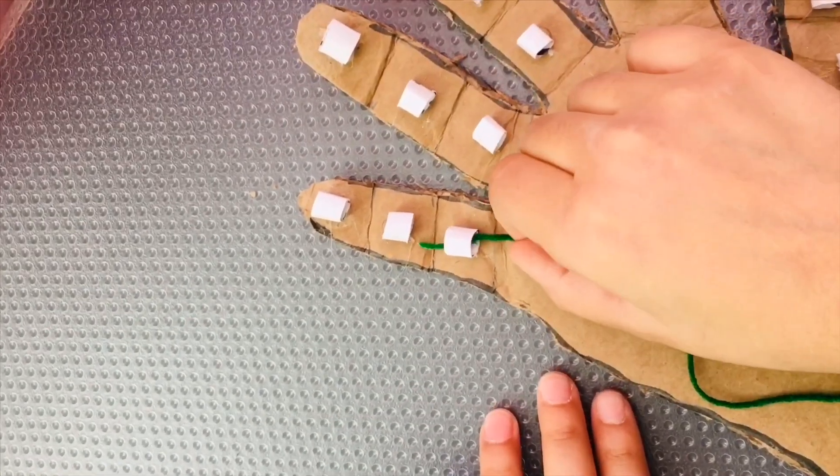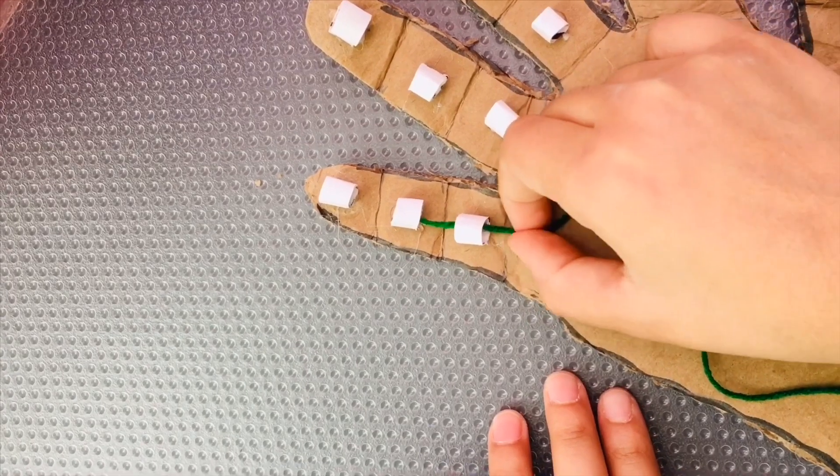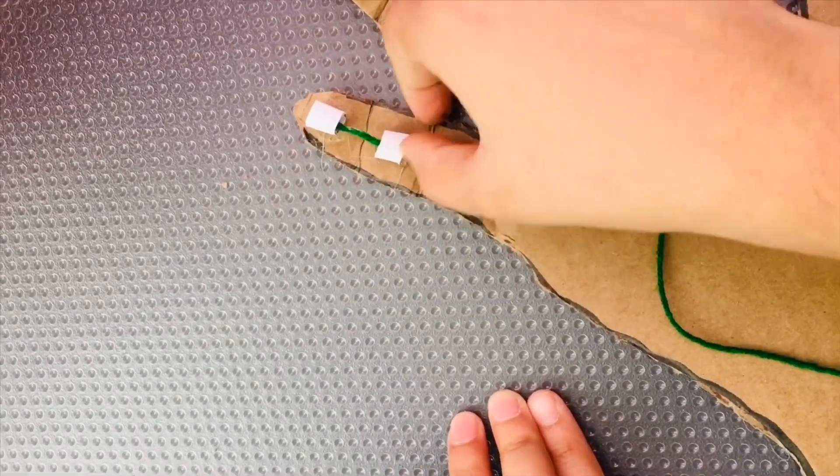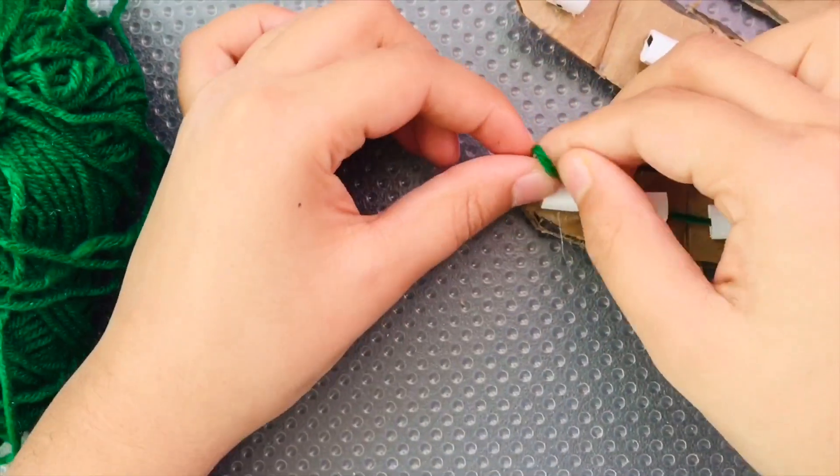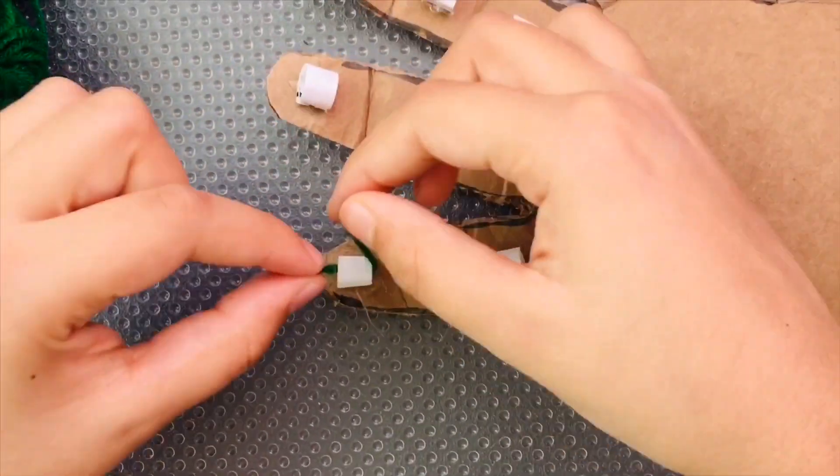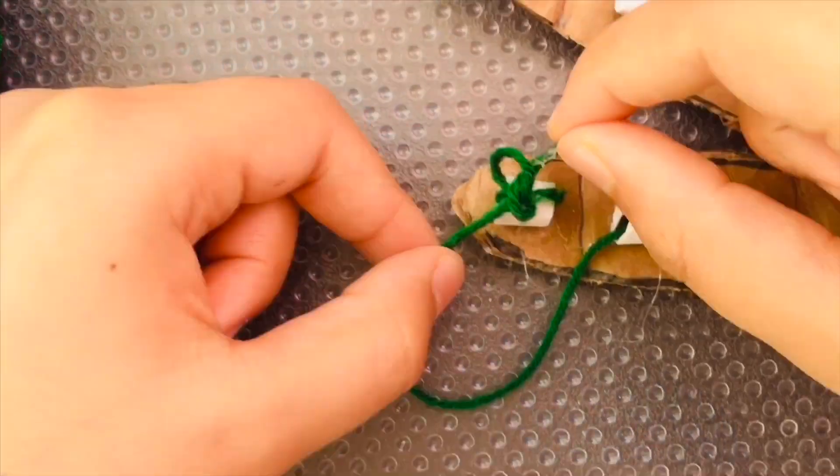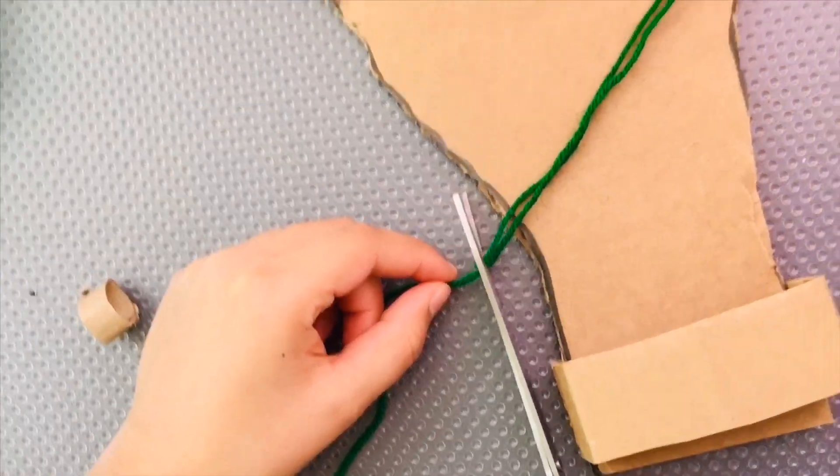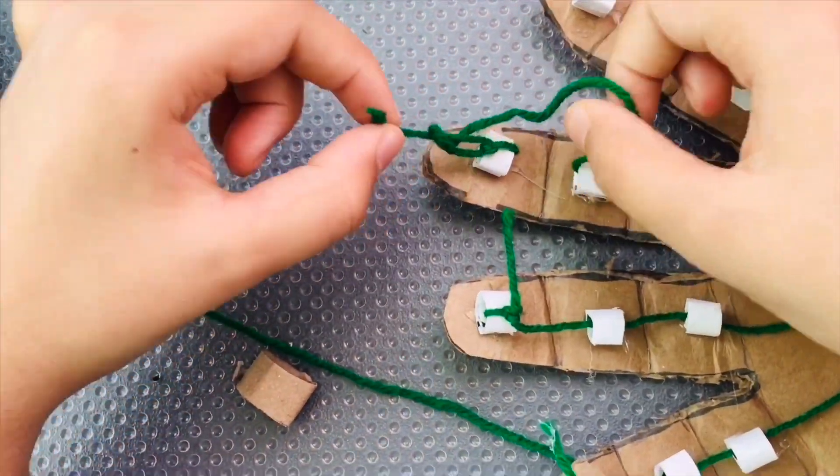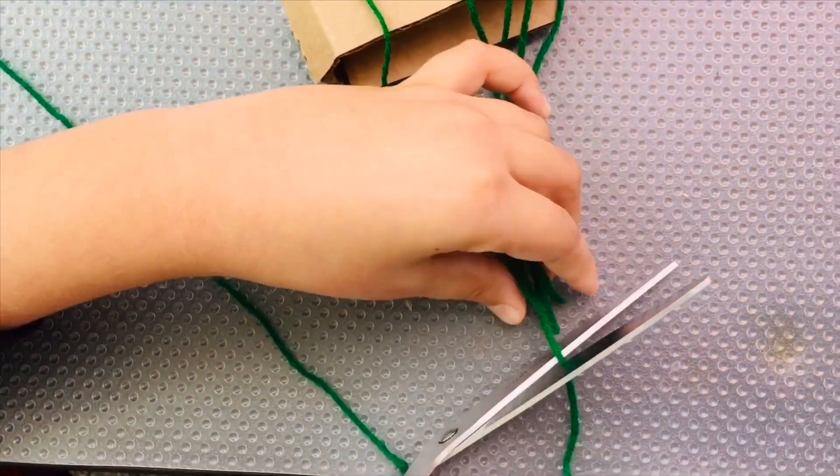Now, pass the wool through those tiny holes in the straws. Now, double knot it. Cut the wool. And finish all the fingers like you did with the first one.